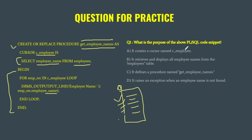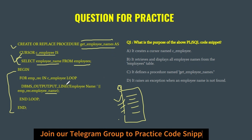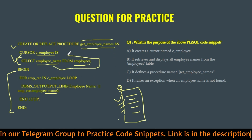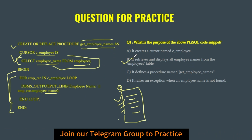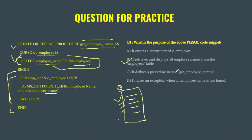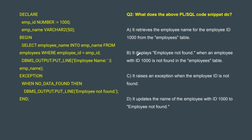So it creates a cursor named C_employees. However, it's not merely creating this cursor — it retrieves and displays all employee names from the employees table. That is the correct answer: it retrieves the employee names through this SELECT statement and displays them with the output line. Option: 'It defines a procedure' — yes, it defines a procedure named get_employee_name, but it is not only doing that. Option: 'It raises an exception when an employee name is found' — no, nothing like that is happening here. So our correct answer is option B.